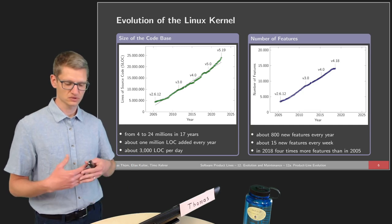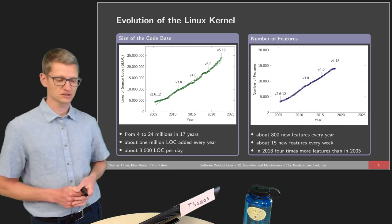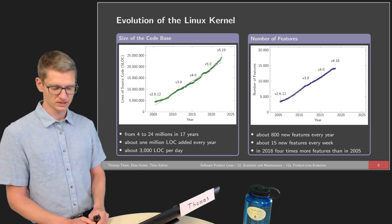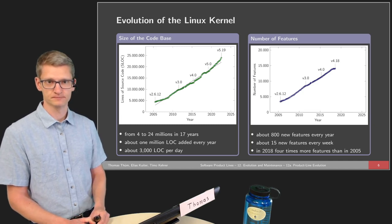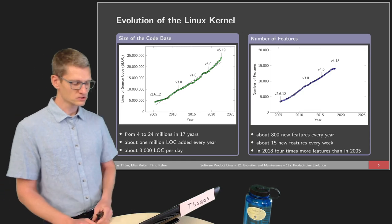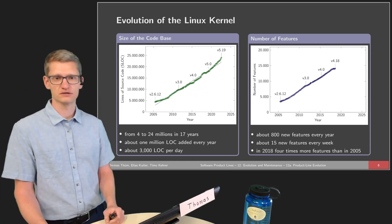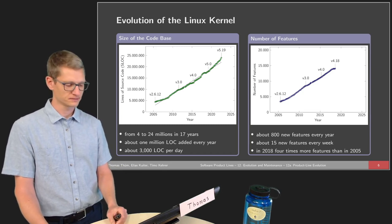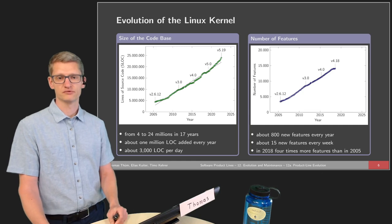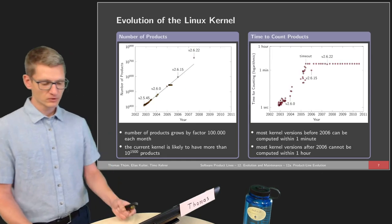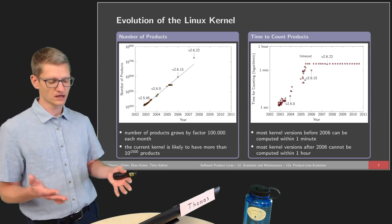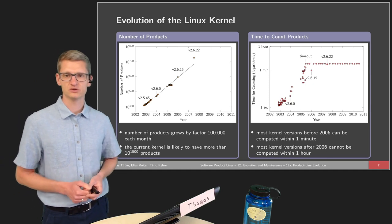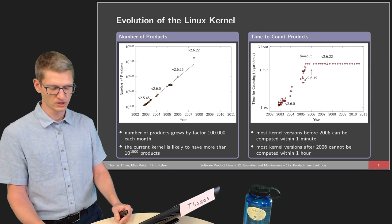In terms of lines of source code, the Linux kernel gets about one million lines of code added every year — roughly 3,000 lines every day — so it is getting more complex. We also see this in the number of features: roughly 800 new features every year, about 50 new features every week, making it probably the largest growing product line available. The number of possible configurations cannot really be computed, but it's likely to be more than 10 to the power of 1,500.